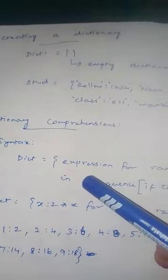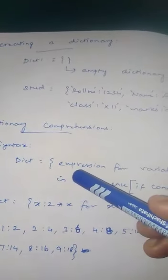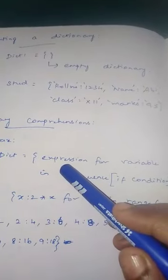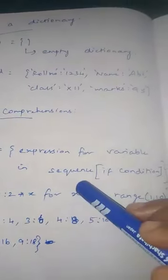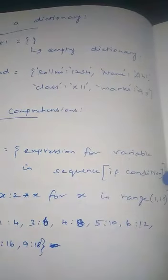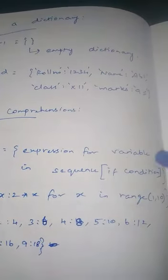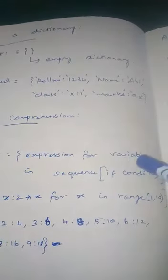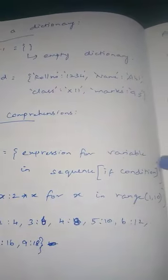Next, dictionary comprehension. What is dictionary comprehension? Similar to list comprehension, we can give some expression using this. The syntax is: dictionary = {expression for variable in sequence if condition}. The curly braces enclose the expression, the for-loop over a sequence, and an optional if condition.